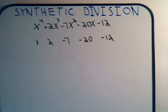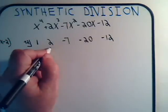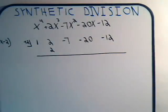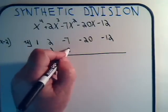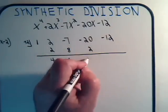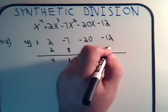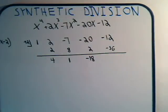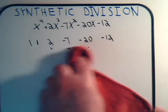How about x minus 2? We write down plus 2 here and plus 2 underneath. Add and multiply: plus 2 gives 4, times 2 is 8. This is going to be plus 1 times 2 is plus 2. This would be minus 18 times plus 2 is minus 36. That's not going to add up to 0. Don't waste any more time on it — x minus 2 is not a factor.